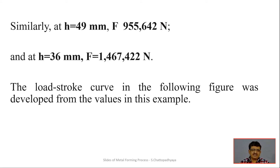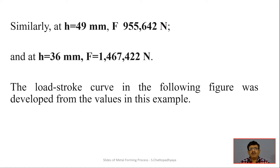At h = 36 mm (the final height), the same procedure is repeated: constant volume gives the new area, from which the new diameter is determined using π d² / 4 = area. The new diameter enables us to compute the new K_f, and with the known force formula and new area, the forging force comes out to be 1,467,422 N — the highest value, as expected at the final stage.